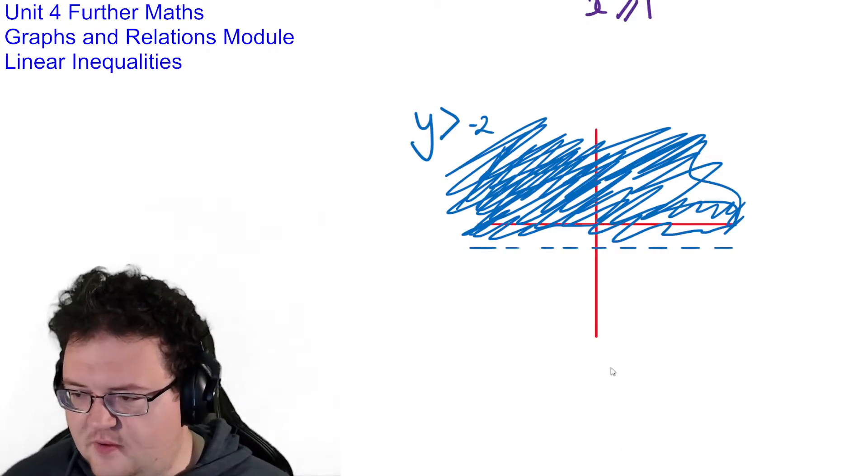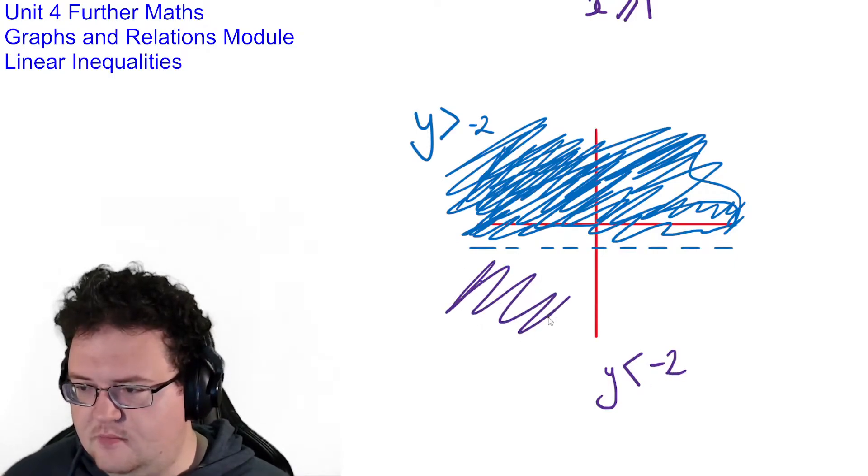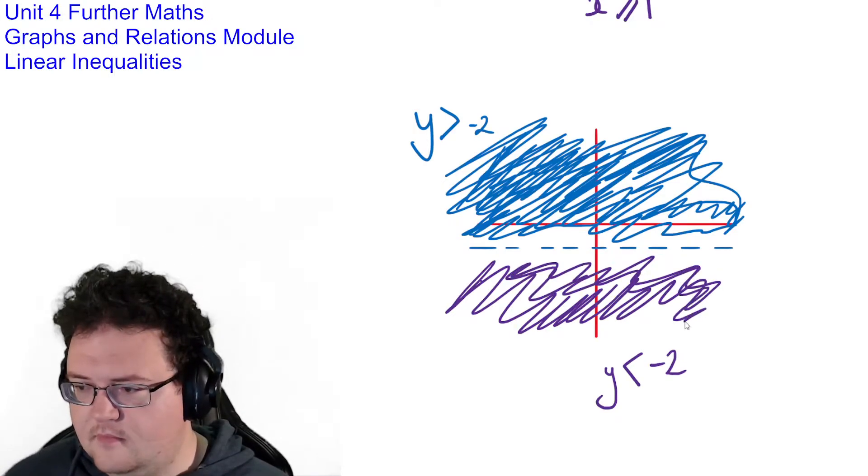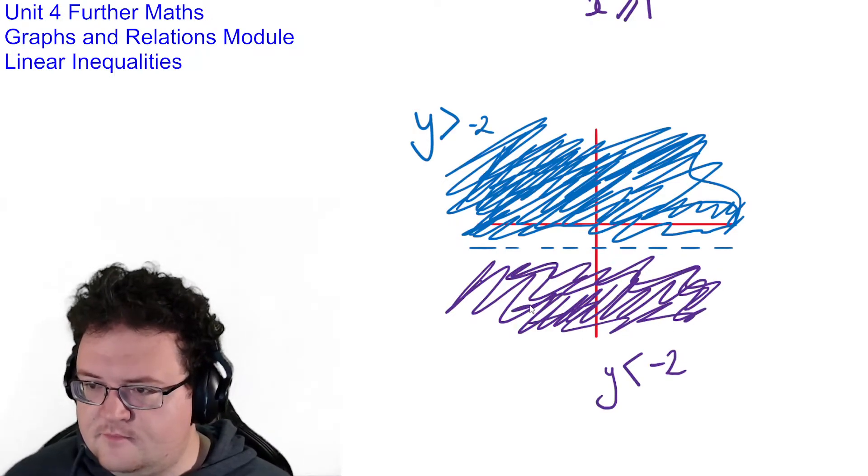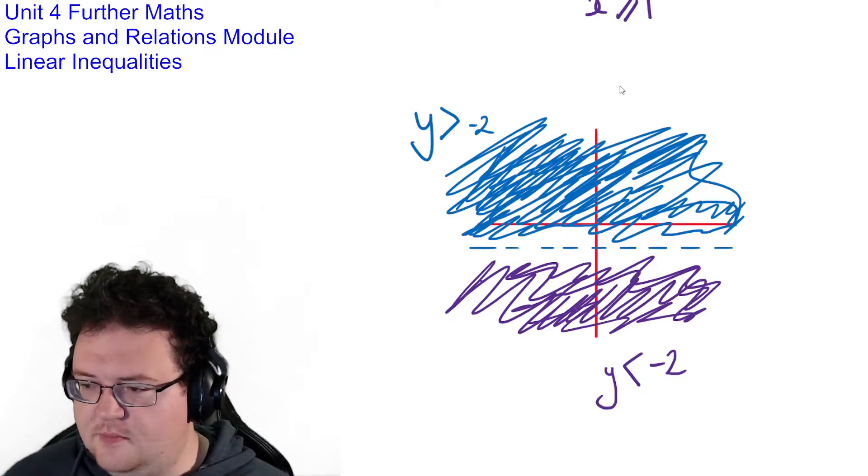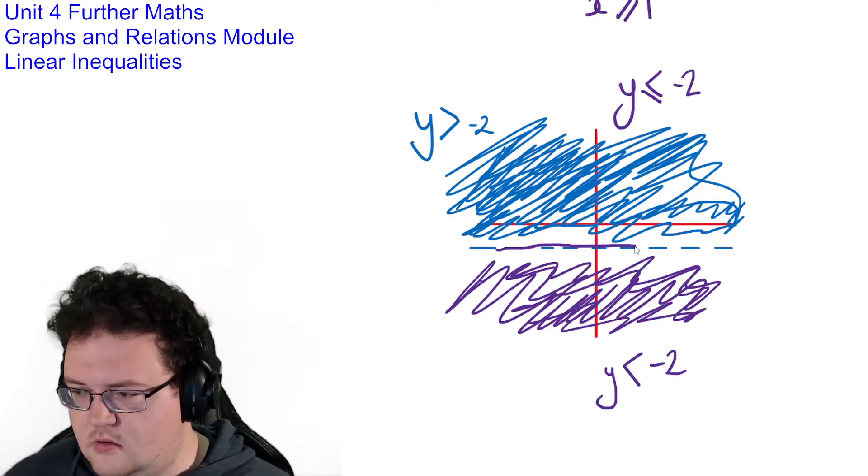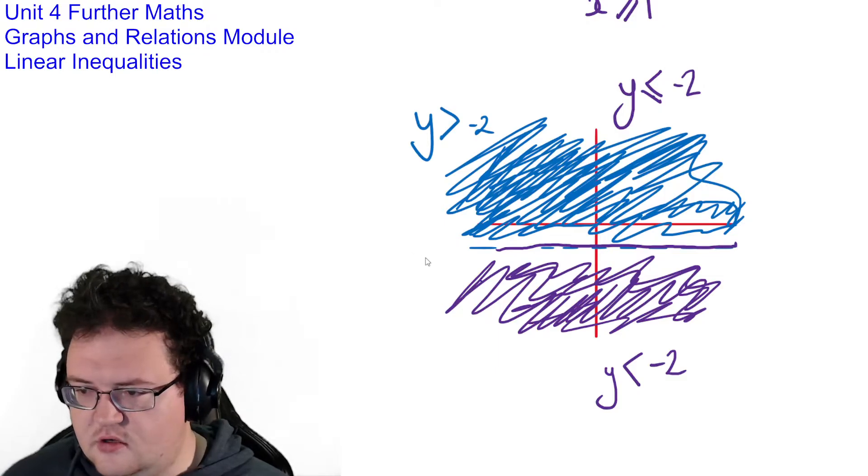And of course if I was to do it the other way around and do, for example, y is less than minus 2, then that's everything below that line instead. And of course if I change it and I start talking about y is less than or equal to minus 2, then this line all of a sudden becomes solid. Obviously you would use a ruler.